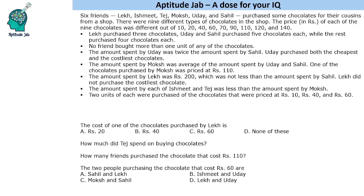Hello everyone, welcome to Aptitude Jab. This is a caselet. Six friends — Lake, Ishmit, Tej, Moksh, Uday and Sahil — purchased some chocolates for their cousins and there were nine different types of chocolates. The price of each unit is given, along with information about the number of chocolates they purchased and their expenses. Lake purchased three chocolates, Uday and Sahil five chocolates, and the rest purchased four chocolates each.